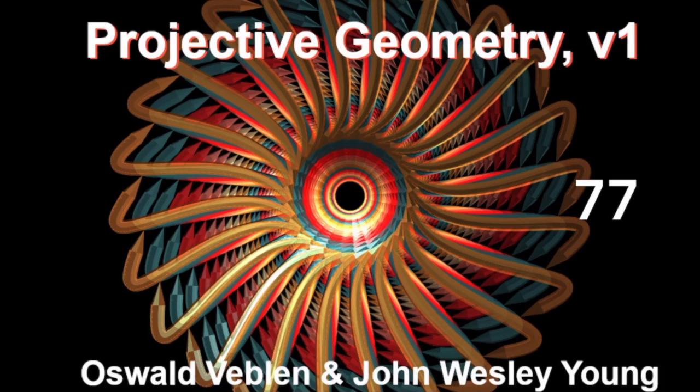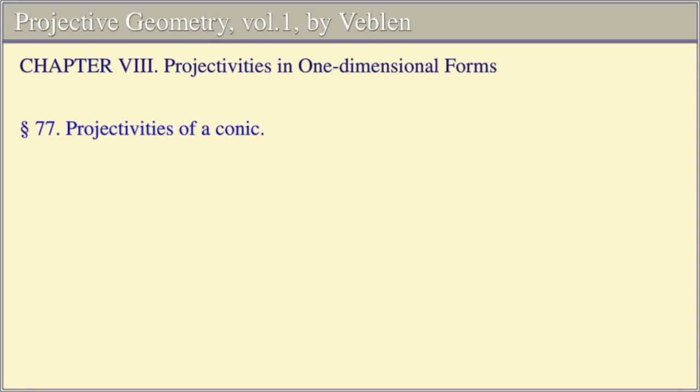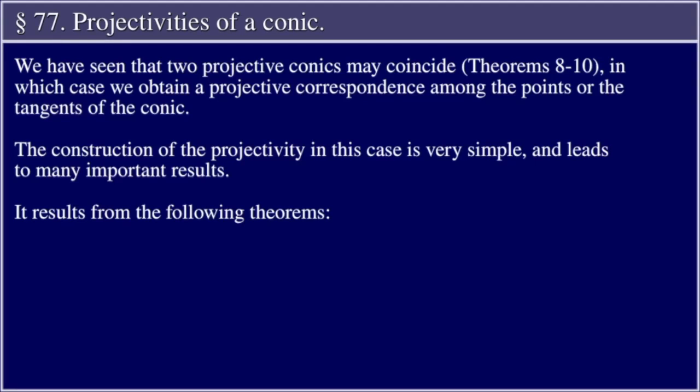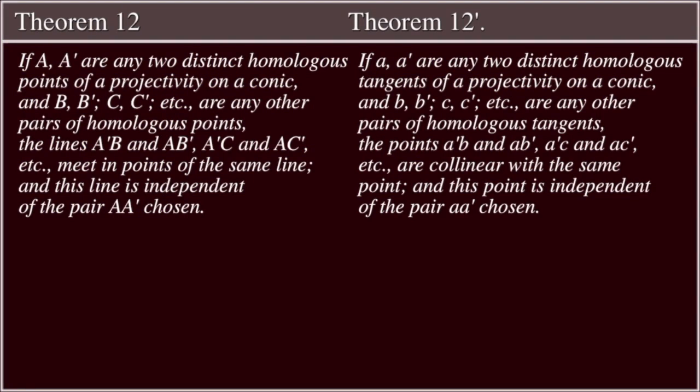Projective Geometry, Volume One, by Oswald Veblen and John Wesley Young. Chapter Eight: Projectivities in One-Dimensional Forms. Section 77: Projectivities of a Conic. We have seen that two projective conics may coincide (Theorems 8 through 10), in which case we obtain a projective correspondence among the points or the tangents of the conic. The construction of this projectivity is very simple and leads to many important results.